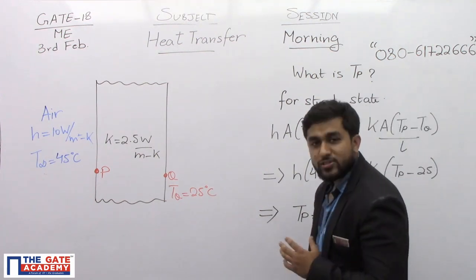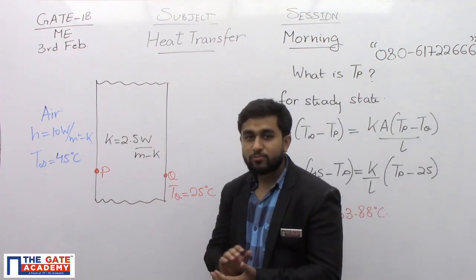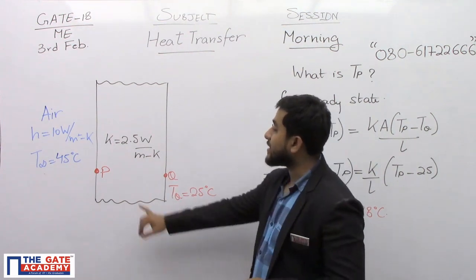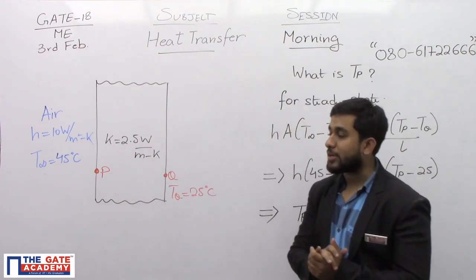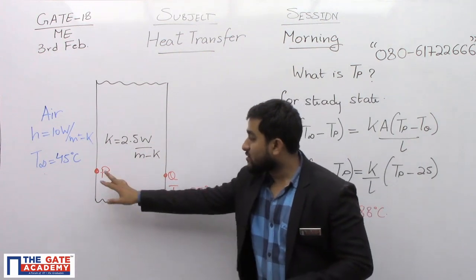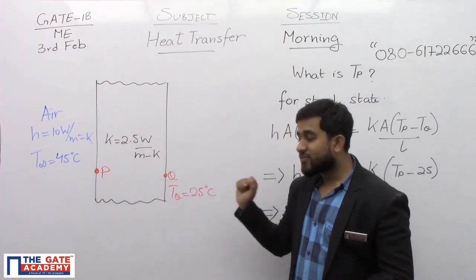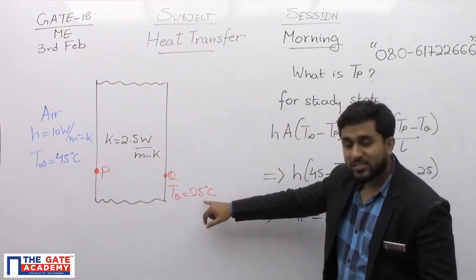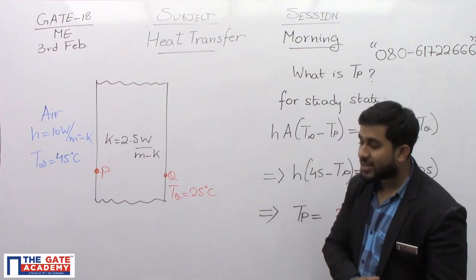The question is very simple. There is a wall of uniform thermal conductivity with a value of 2.5 Watt per meter Kelvin. The two faces of the wall are P and Q while the right face, the Q face, is at a steady state temperature of 25 degree Celsius.